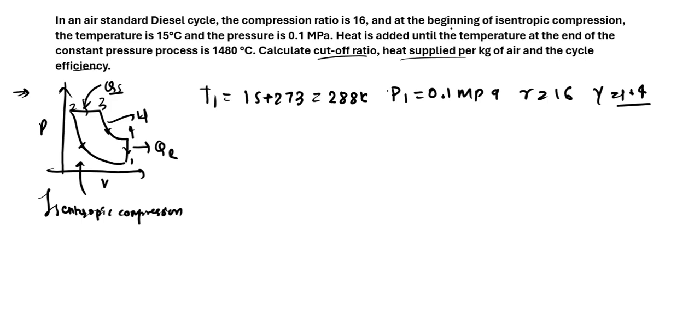And we have the heat is added until the temperature at the end of the constant pressure process, which is at 3, becomes 1480. So T3 we have as 273 plus 1480, which will be 1753 Kelvin.